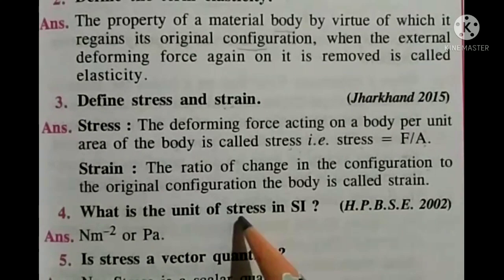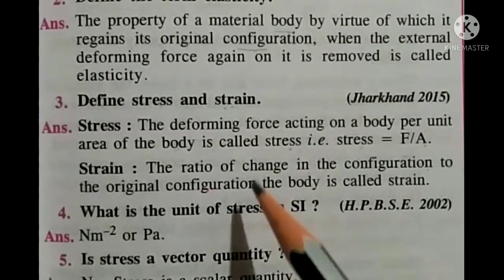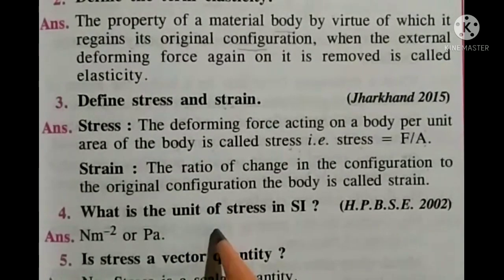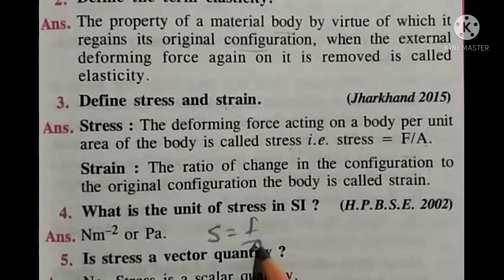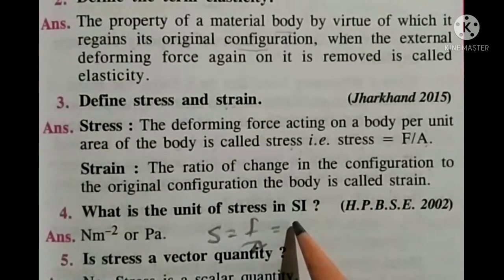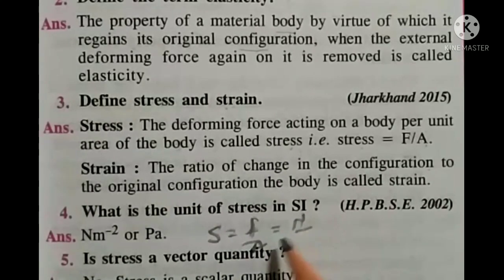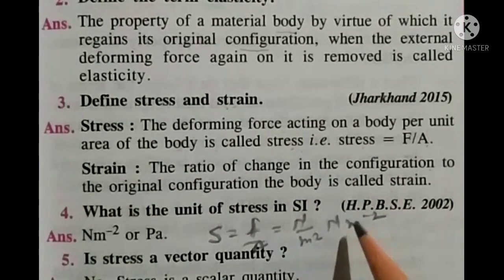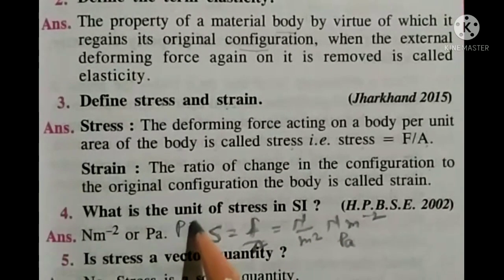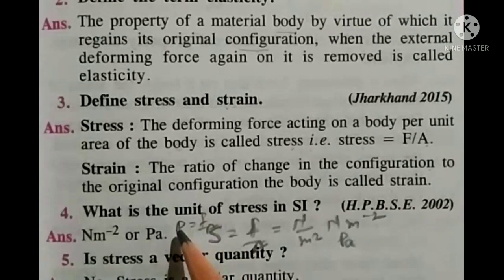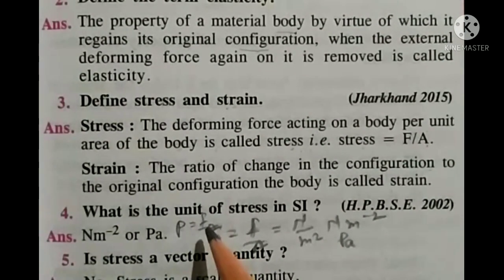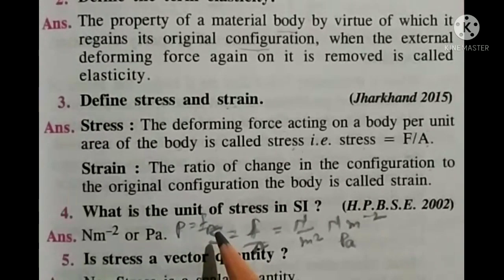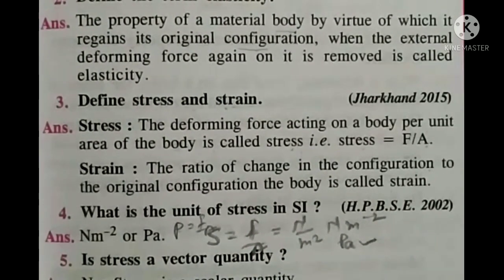Question number four: what is the unit of stress in SI? Stress equals force upon area, so its units are Newtons per meter squared, or N·m⁻². This is also expressed as Pascal, because pressure is also force upon area, and the unit of pressure is Pascal. Therefore, the unit of stress is also Pascal.